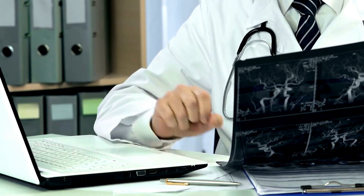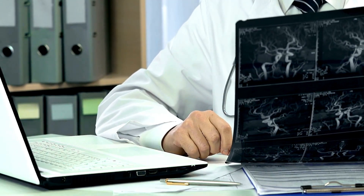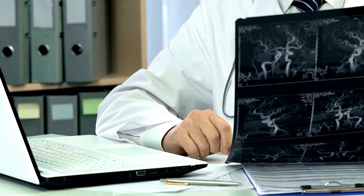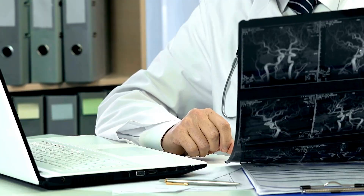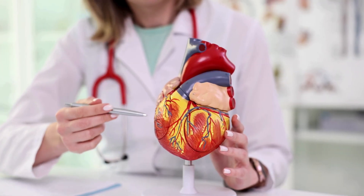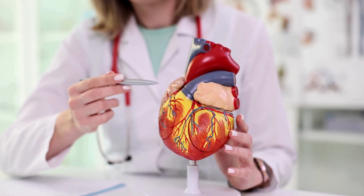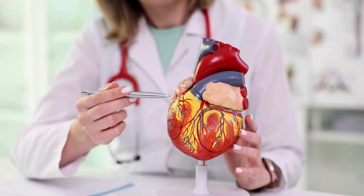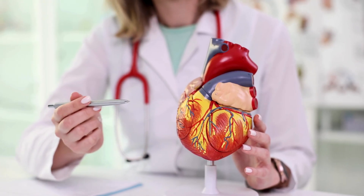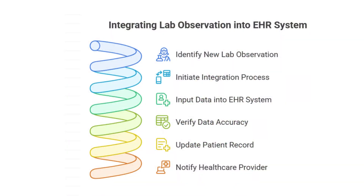Let's imagine you're an analyst at CityCare Hospital, and your team gets a request: add a new lab test, BNP — that's brain natriuretic peptide — a super crucial marker for heart failure. You need to get this into Epic so clinicians can see it, track it over time, and most importantly, act on it. It's not just simple data entry. It's more like building a really robust pipeline for critical patient info, and the stakes are incredibly high.